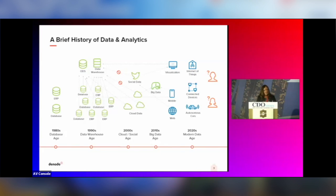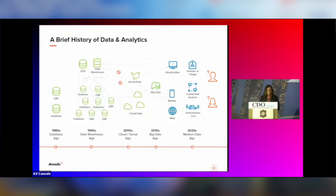Then we discovered there were different types of data — it wasn't just structured data. So we needed other solutions to adapt. We had social data, cloud-based data, and all sorts of different types of data emerging in the 2000s. And when it came to the 2010s with big data, we had challenges around integrating data and the inability to work with a very distributed data ecosystem. With big data, we used to talk about the three Vs: volume, velocity, and variety. And we certainly have that today, along with a more distributed environment to tackle.